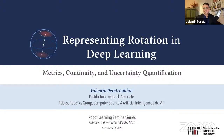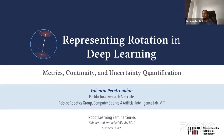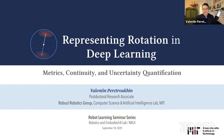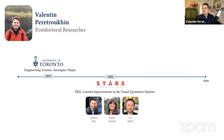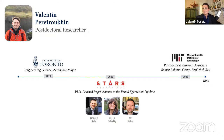Thank you for the introduction. My name is Valentin Peretroukhin. I'll be talking about representing rotation in deep learning. I started my undergrad at the University of Toronto in 2008, graduated in 2013 in engineering science majoring in aerospace. Seven years later, this past March, I defended my PhD thesis entitled 'Learned Improvements to the Visual Ego-Motion Pipeline,' supervised by Professor Jonathan Kelly and advised by Professor Angela Schoellig and Tim Barfoot.